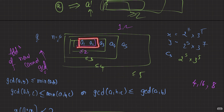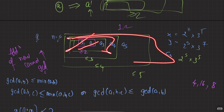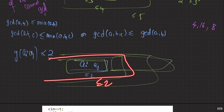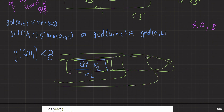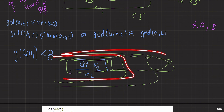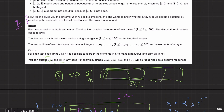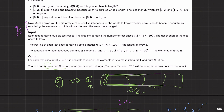So after all the drama of 'good' and 'beautiful', the problem reduces to: can you find two numbers in the array whose GCD is ≤ 2? If yes, print YES; otherwise, print NO. The constraints are n ≤ 100 with 500 test cases, so an O(n²) solution checking all pairs works perfectly fine — that's around 5×10⁴ operations total.